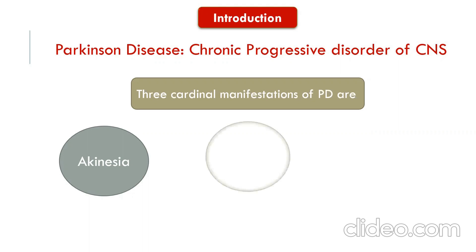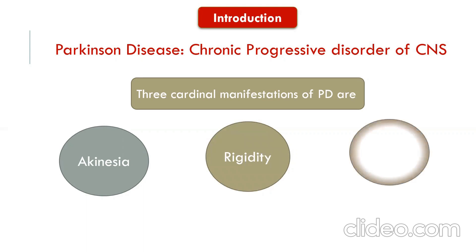Second is rigidity. This is usually a plastic or cogwheel type, meaning it gives way in a series of jerks. Third is tremor. Tremor is repetitive muscle activity, usually worse when the patient is at rest. It is commonly manifested as a pill-rolling motion of the hands and bobbing of the head.